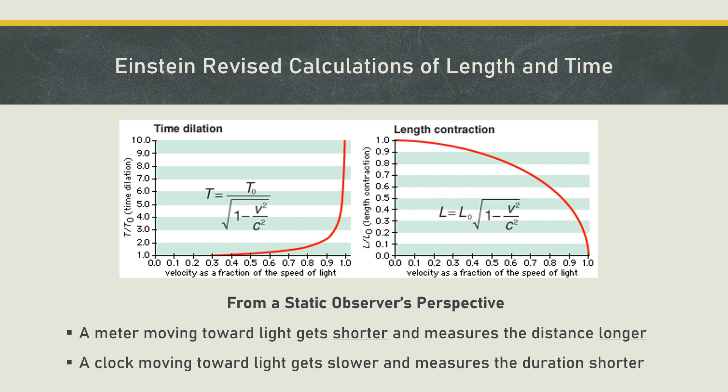The observer using this clock and meter doesn't know that the meter has contracted or the clock is running slower. He trusts his meter and clock as giving him true information about the state of reality. Therefore, even as the instrument adjusts, the observer knows nothing about it and accepts the value as if nothing has changed.